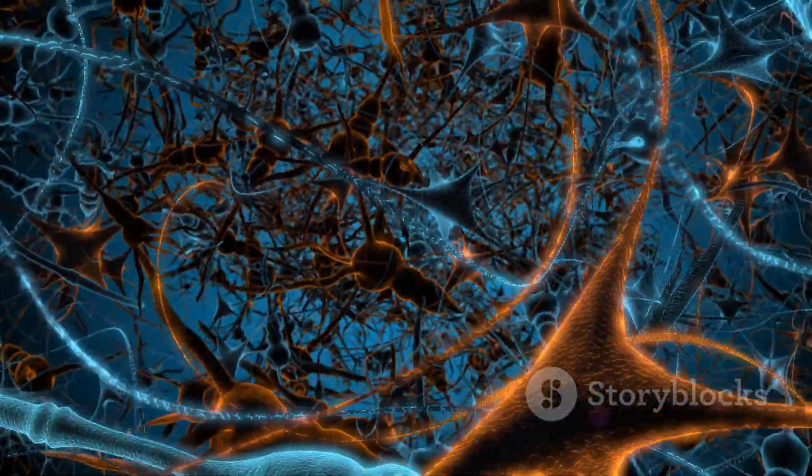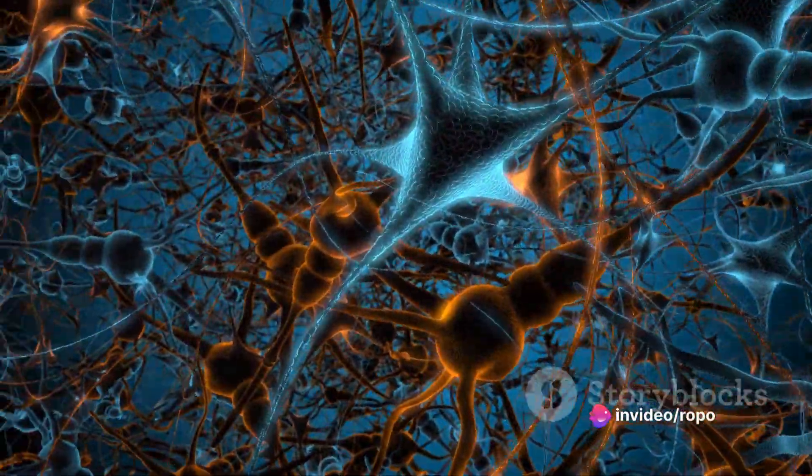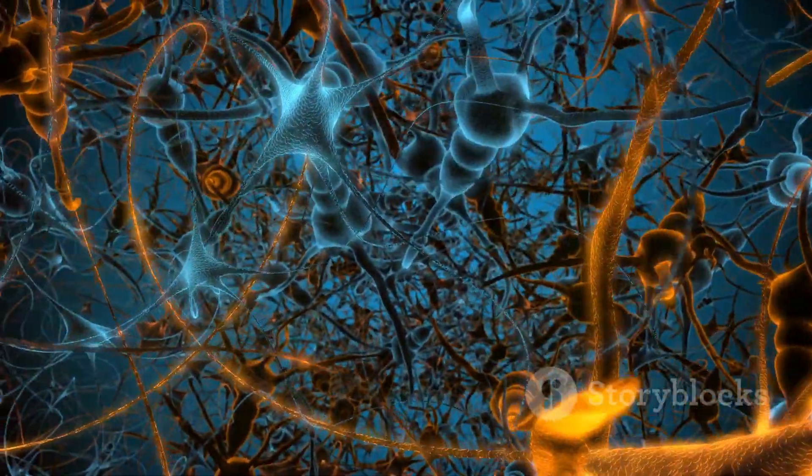During his research, he found that anesthetics largely affect brain neuron cells only after acting on a certain microtubule structure within them. This observation piqued his interest. Why do anesthetics take effect only after acting on these microtubules? What role could these microtubules possibly play in the human brain, or more specifically, in our cranial nerves?